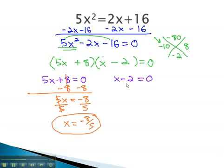We do have a second solution, which comes from the second factor. Adding 2 to both sides gives us x equals 2. When x equals 2, the original equation would also be a true equation.